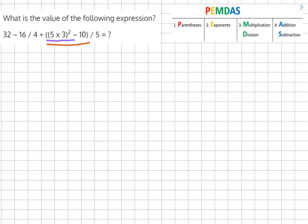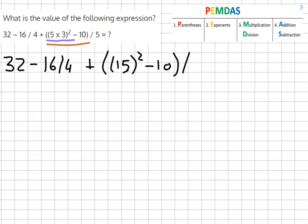So the equation becomes 32 minus 16 over 4 plus 5 times 3 equals 15 squared minus 10 over 5. And then inside the brackets we do PEMDOS again.